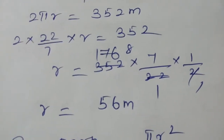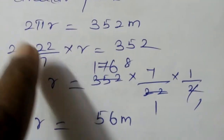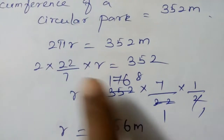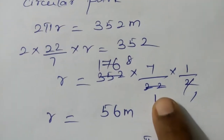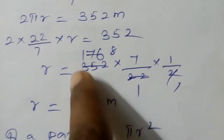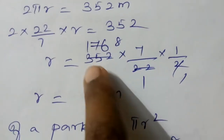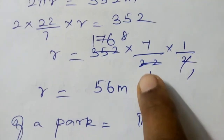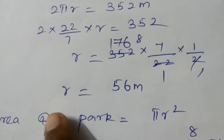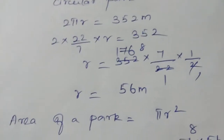To isolate r, take the other values to the right-hand side. So r equals 352 multiplied by 7 by 22 divided by 2. Cancelling 2 gives 176, and 22 goes into 176 eight times, so 8 into 7 equals 56. Therefore r equals 56 meters.